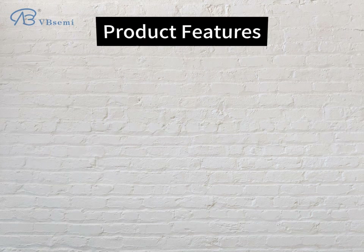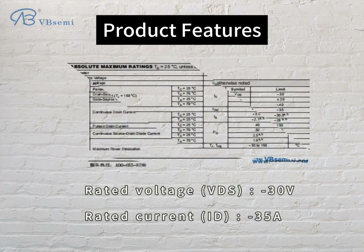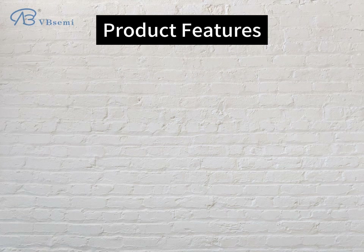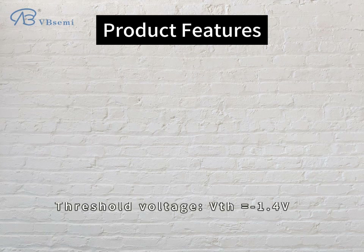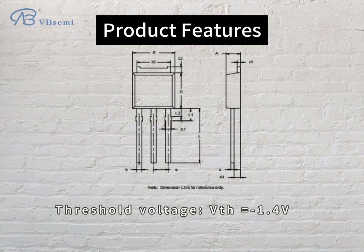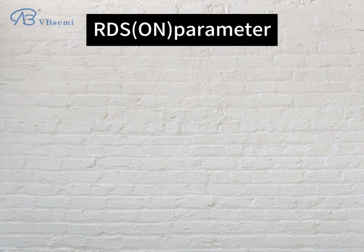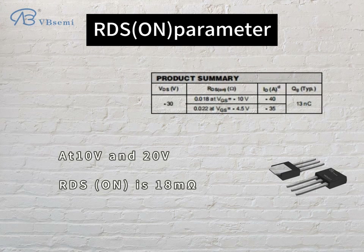Product features: rated voltage VDS is 30V, rated current ID is 35A. Threshold voltage VTH equals -1.4V. RDS-ON parameter at VGS = -10V and -20V, RDS-ON is 18 mΩ.